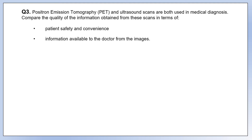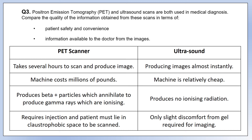Moving on to a different type of imaging: positron emission tomography compared to ultrasound scans. Many medical physics questions involve comparing and contrasting imaging types. In terms of convenience, a PET scan requires several hours in hospital, injection of a tracer, and time to process images, whereas ultrasound is quick — images are produced almost instantly. PET scanners cost millions, making them expensive and less available, while ultrasound machines are relatively cheap and widely accessible.